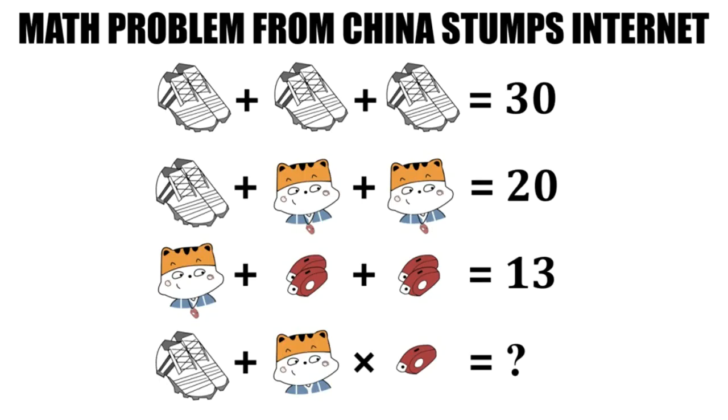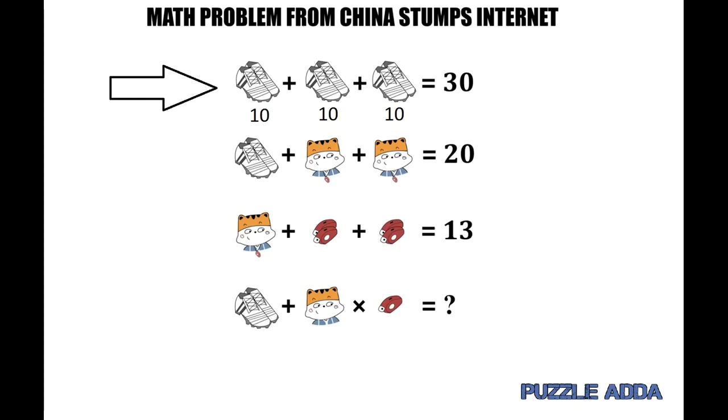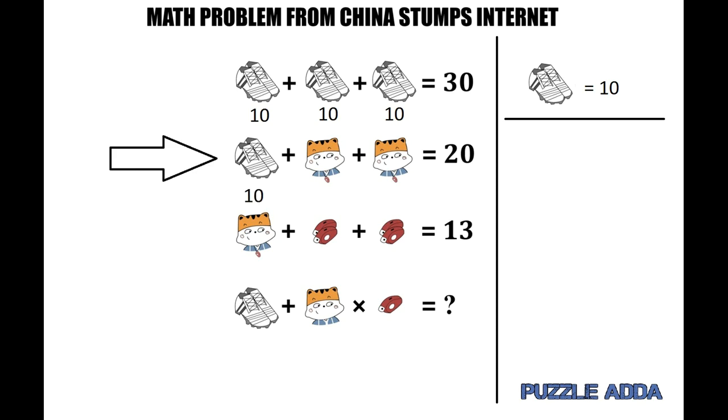In the first equation, you can see three pairs of shoes equal 30, so a single pair of shoes equals 10. Now coming to the second equation, you have a pair of shoes plus a cat with a whistle on its neck plus a cat with a whistle on its neck equals 20.